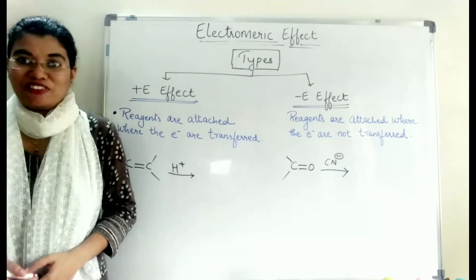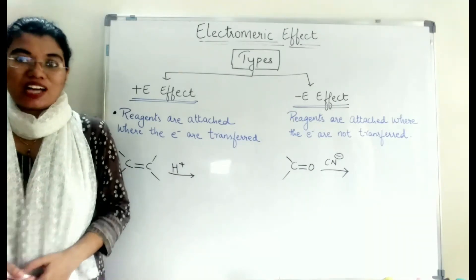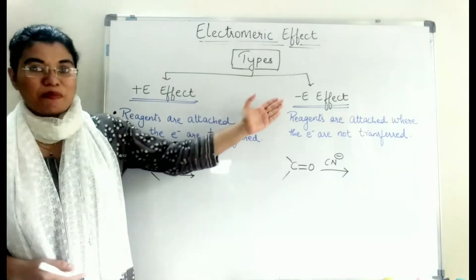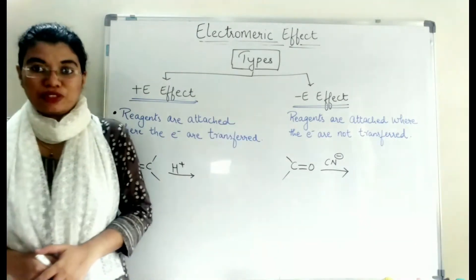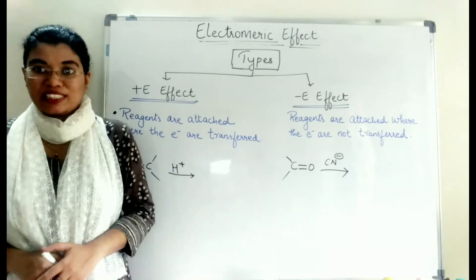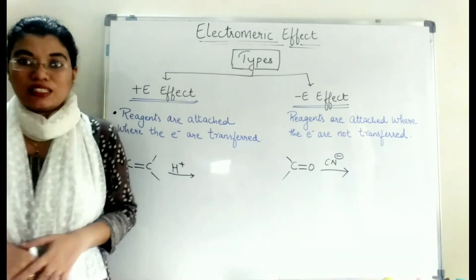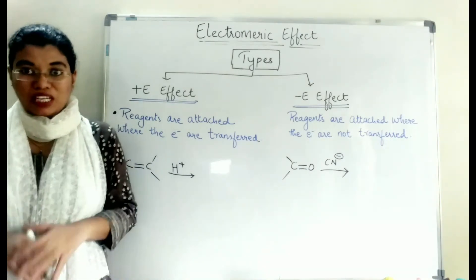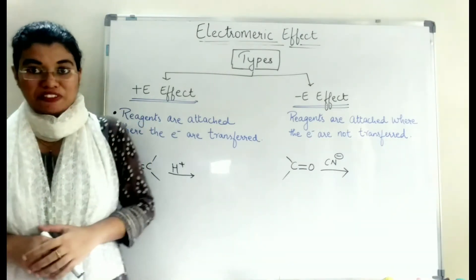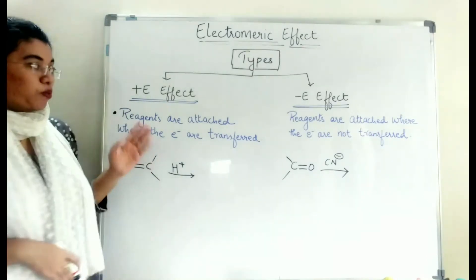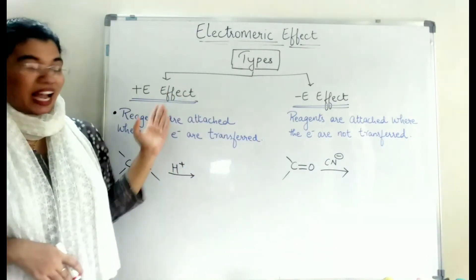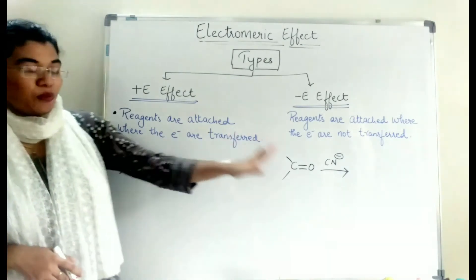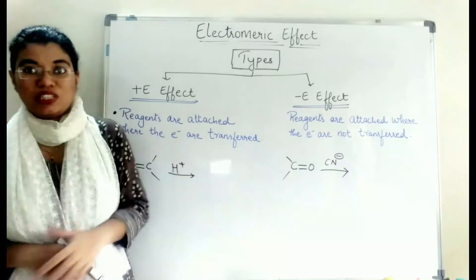Now, looking at the types of Electromeric effect, there are two types: one is the plus C effect and the other is the minus C effect. One important thing to remember is that an attacking reagent must always be present for the Electromeric effect to occur. In both the plus C and minus C effects, an attacking reagent is present.